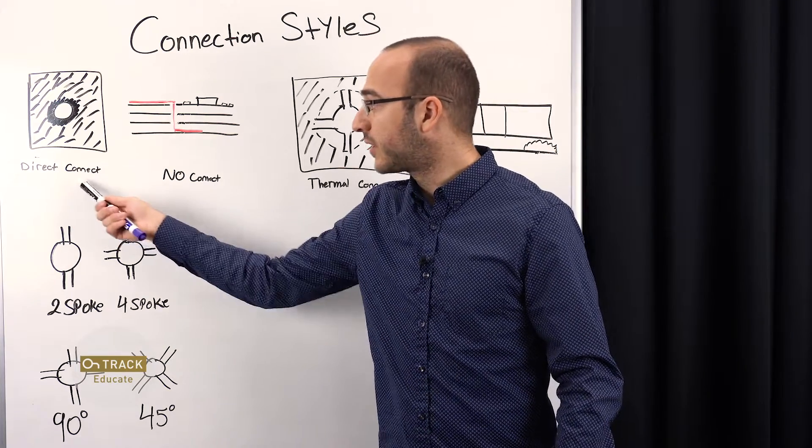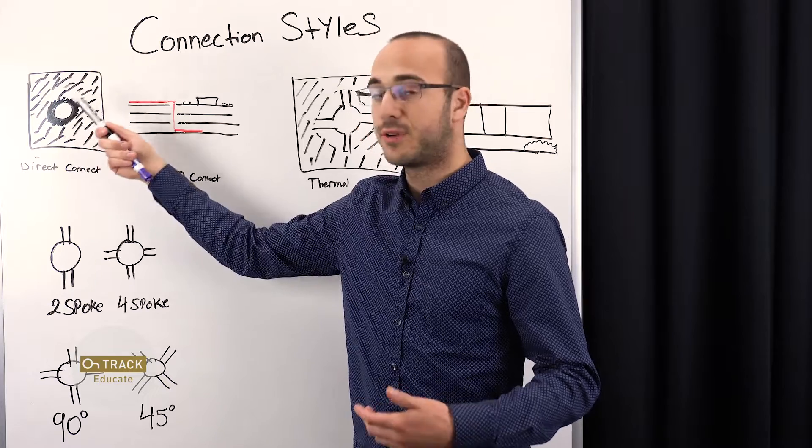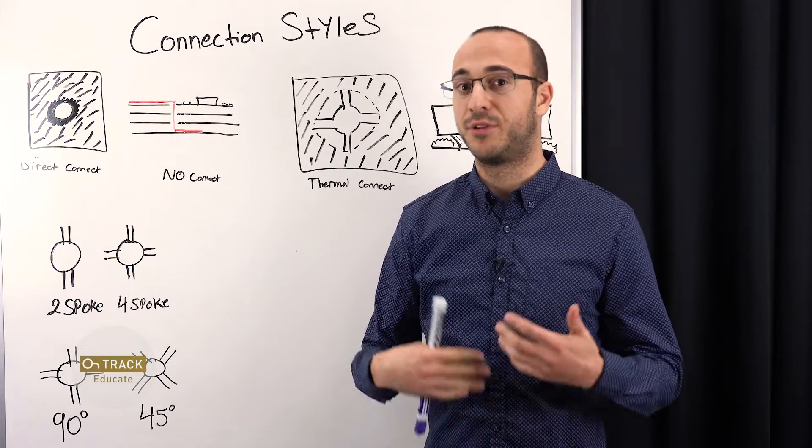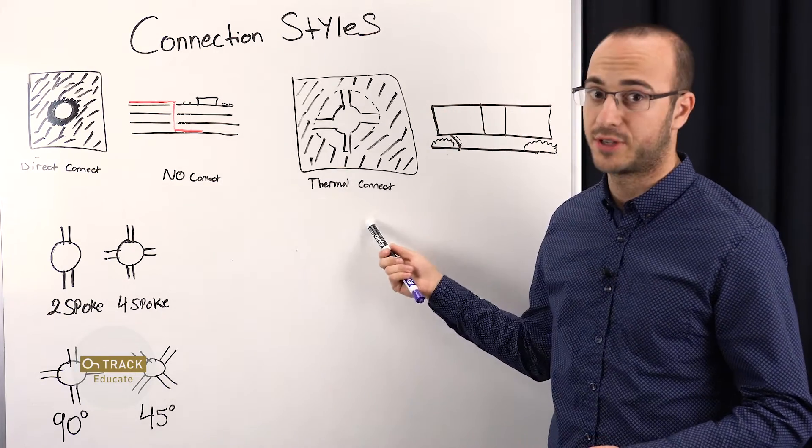So let's get right into it. Direct connect is when we have a pad or a via connected all around to its surrounding copper. And that's really going to be your default, what you use most of the time. You're going to use it when you don't use a no connect or a thermal connect.